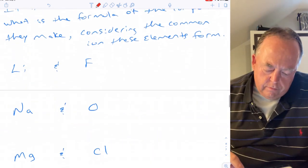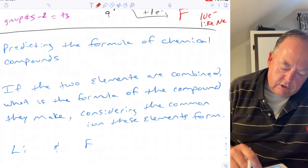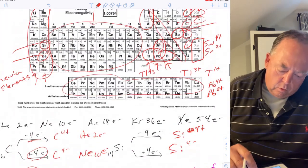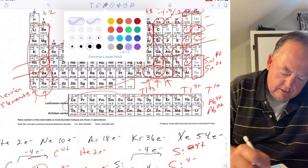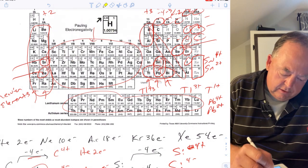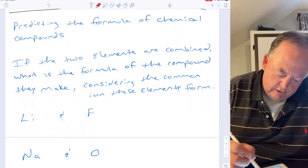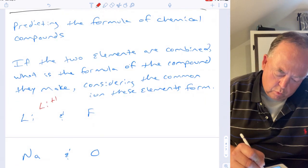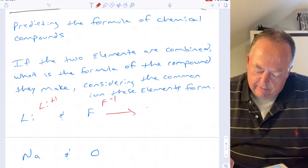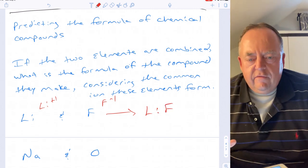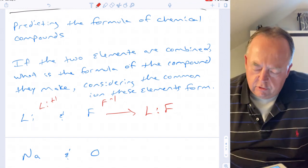You can use this to predict what compounds elements will form. Lithium is in group one, so it wants to be plus one charged. Fluorine wants to be negative one charged. If these make a chemical compound, it will simply be LiF — one of each — because the charges balance to zero: plus one and negative one equals zero.